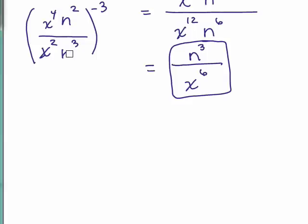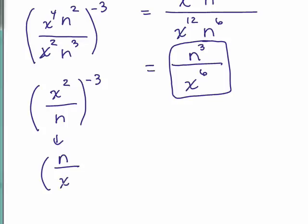And notice you're going to get exactly the same answer. You could also simplify within the parentheses first. Okay. So let's say you were going to simplify inside the parentheses first. I have x to the 4th over x squared. It's going to be an x squared in the numerator. There's more n's in the denominator. So that's n. And then you could take the reciprocal to the positive 3, and then you could use your power rule.